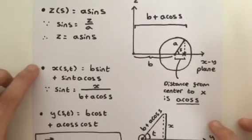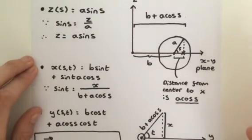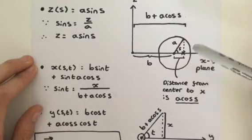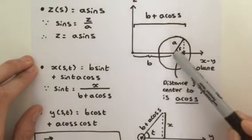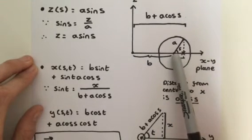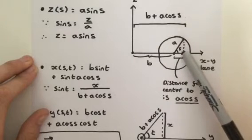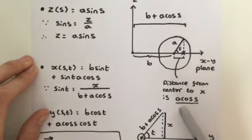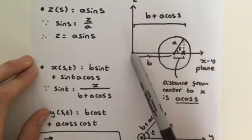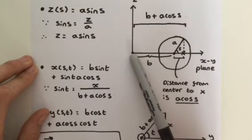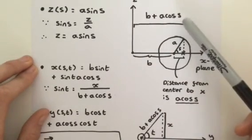Now it gets a bit more technical with our X and Y components. Let's go back to this diagram quickly. So we have B and A. Now this distance from the centre of the circle to this point X is given by A cosine of S. So therefore the distance from the centre of the circle to the distance X is B plus A cosine of S.